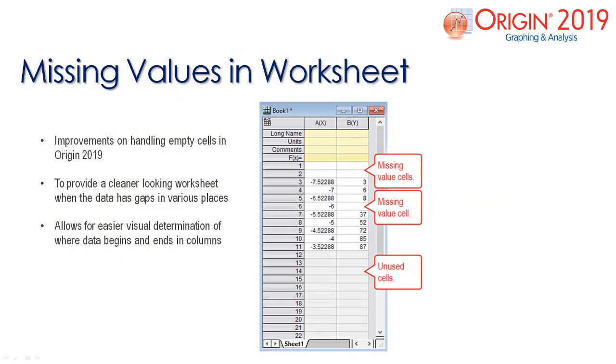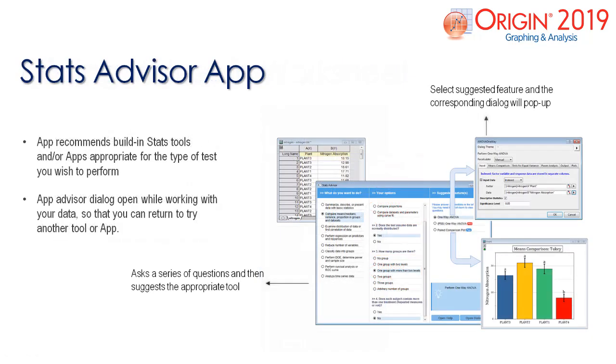Improvements on handling empty cells are in Origin 2019. This provides a clean-looking worksheet when the data has gaps in various places.